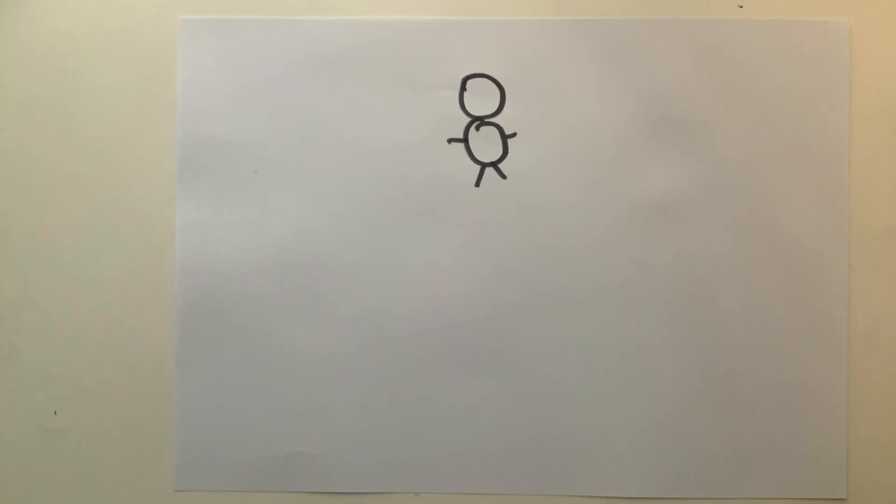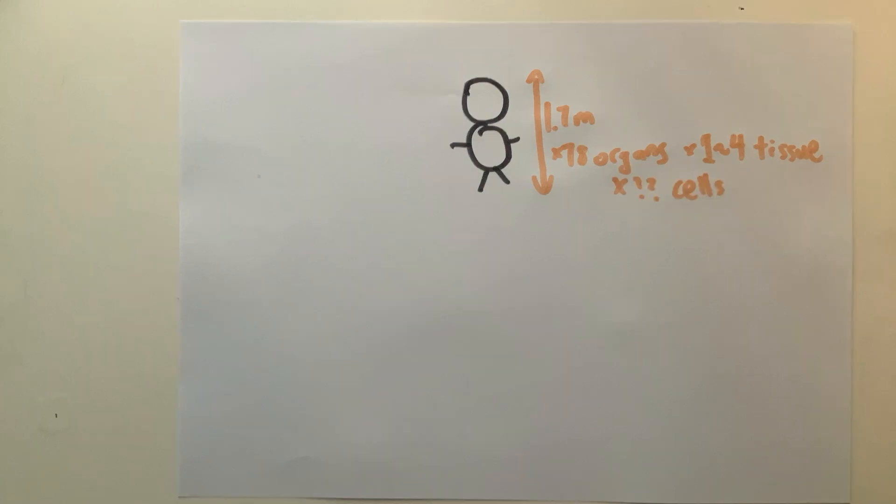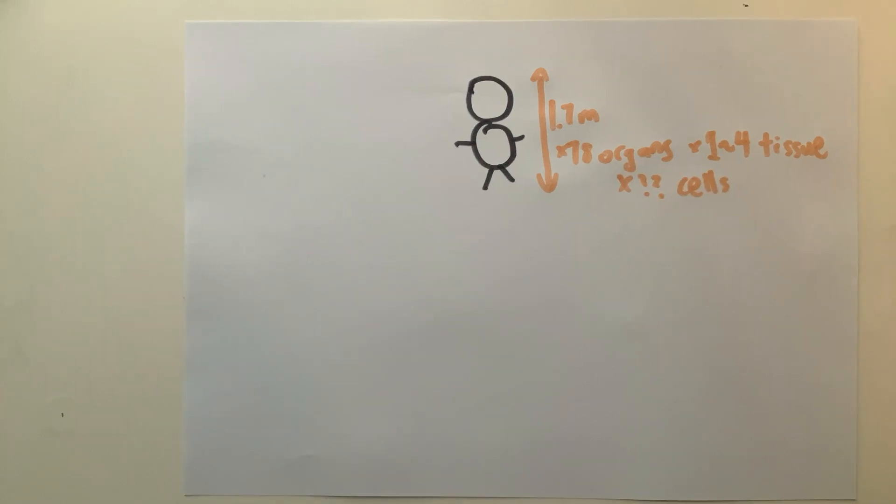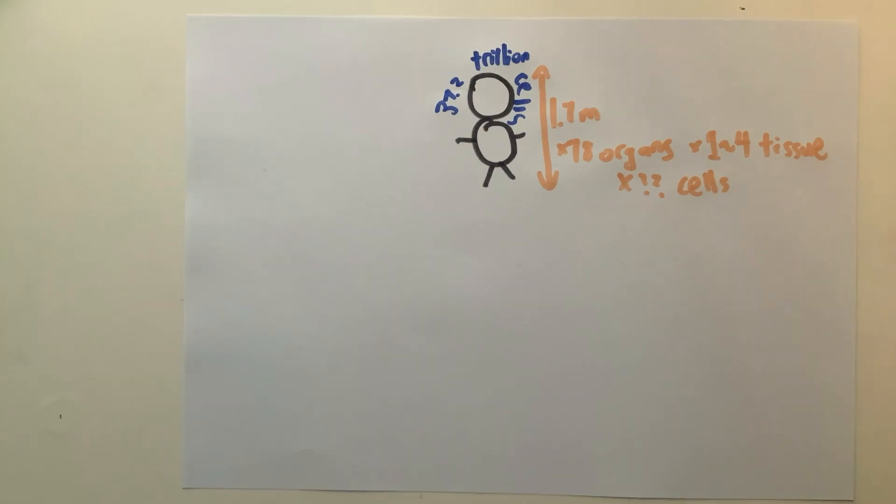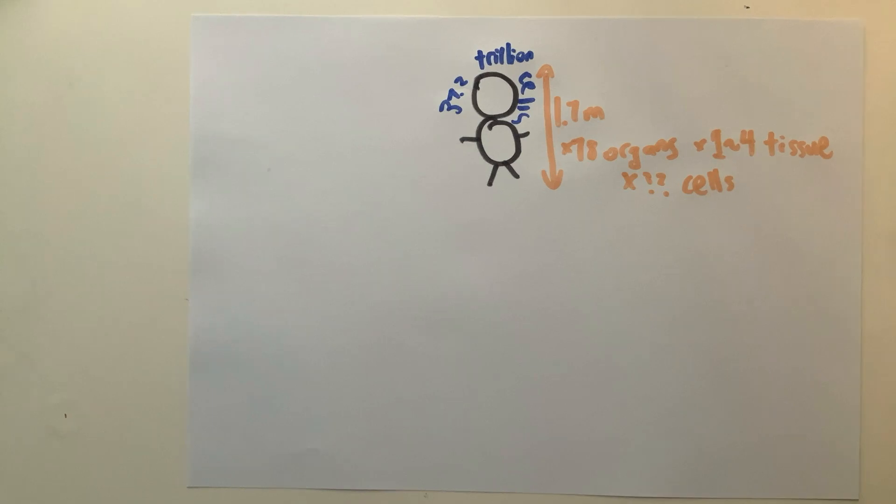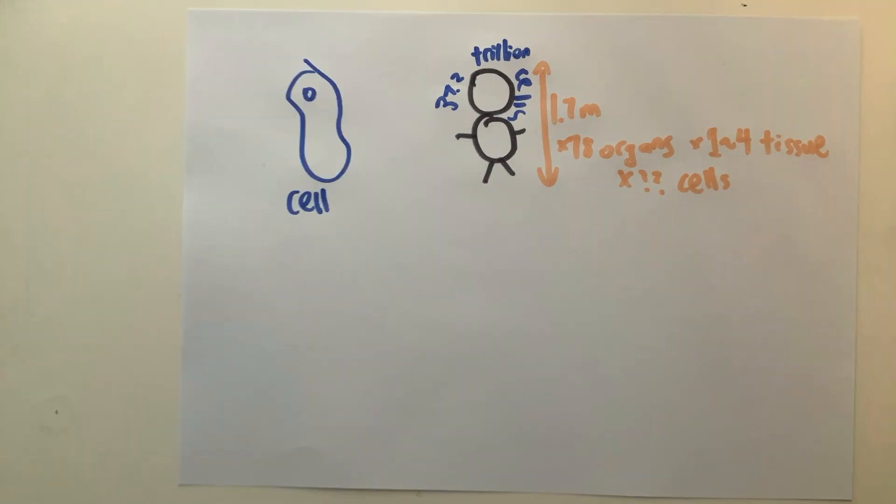Picture the average human, around 1.7 meters tall. A human is made up of 78 organs, each of which is made up of at least one of four types of tissue. Each tissue is made out of countless cells. In total, scientists estimate that there are around 37.2 trillion cells in your body, excluding bacteria and other microorganisms that are living on you. If each cell were the size of a human, you would be as tall as 20 Mount Everests.